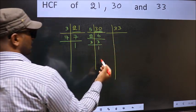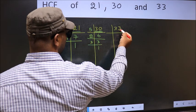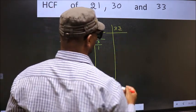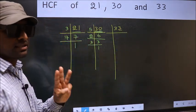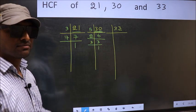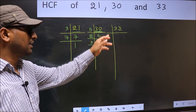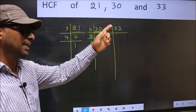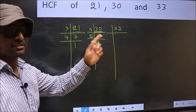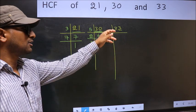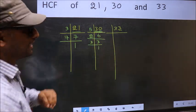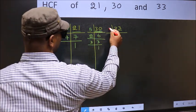Now the other number, 33. Last digit 3, not even, so not divisible by 2. Next prime number is 3. To check divisibility by 3, add the digits: 3 plus 3 equals 6, and 6 is divisible by 3. So this number is also divisible by 3.